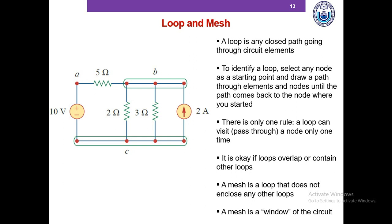Now what is a mesh? A mesh is basically a loop that does not contain any other loop. A loop can have another loop inside it, but a mesh cannot have another mesh or loop inside it. The easy way to identify meshes is to think of the circuit like windows. For instance, this circuit has basically three windows — three meshes. The first mesh is A → 5Ω → 2 → 10V → A. The second mesh is B → 2Ω → C → 3Ω → B. And the third mesh is B → 3Ω → C → 2A → B.